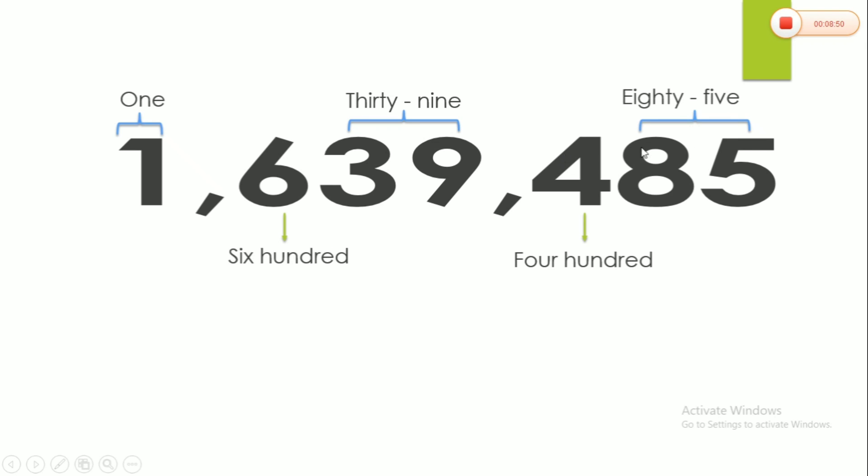Now, if we are going to group this one, these 2 digits here read as 85. Yes, correct. This one is 400. Here is 39. Here is 600. And last one is 1. Actually, this form is in hundreds group. Yeah, this one. Next one is in thousands group. And finally, this one is millions group.